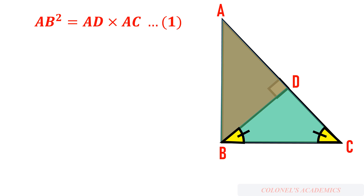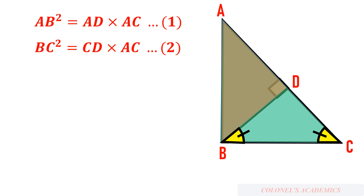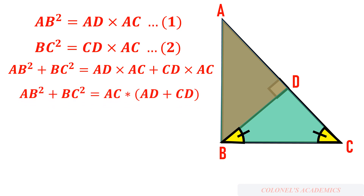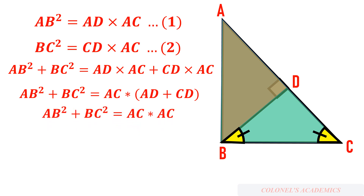We have AB² = AD × AC and BC² = CD × AC. Adding these two equations: AB² + BC² = AD × AC + CD × AC. On the right-hand side, AC is common, so we get AC × (AD + CD). Since AD + CD = AC, this becomes AC × AC = AC². Therefore AB² + BC² = AC², proving the Pythagorean theorem using similar triangles.